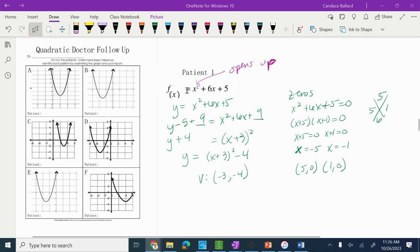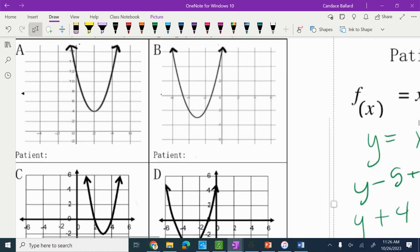I know because this is positive I'm looking for a graph that's opening up. Well, on this first page, they're all opening up. I am looking for a vertex that is at negative three, negative four. So I'm going to look through those. I need to zoom in more.